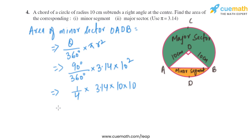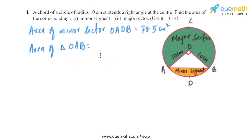Solving gives us one-fourth multiplied by 3.14 multiplied by 100, so the area of the minor sector OADB is 78.5 square centimeters. Now let's find the area of triangle OAB.